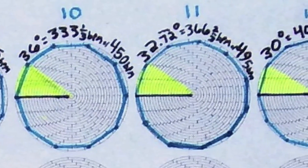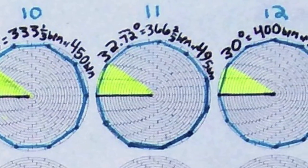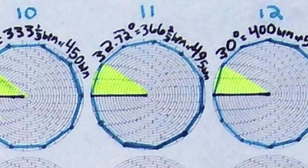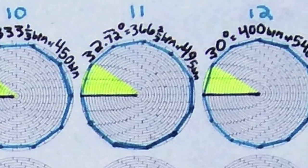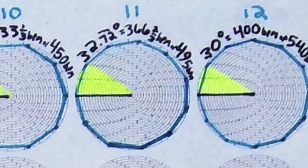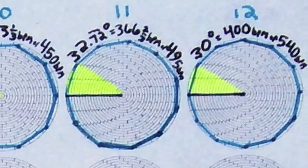11. Hendecagon equals 495 BPM at 45, equals 366 BPM at 33.3. 12. Dodecagon equals 540 BPM at 45, equals 400 BPM at 33.3.